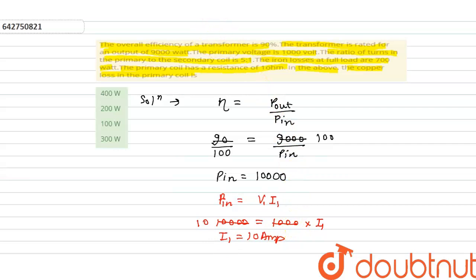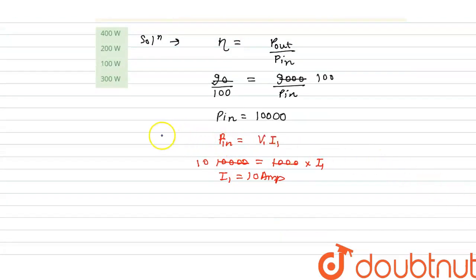So from here, we can calculate copper loss. Copper loss equals I²R.